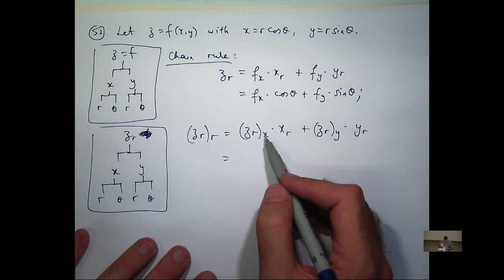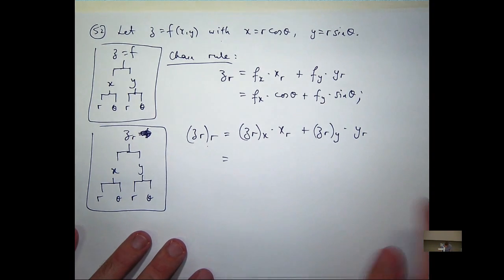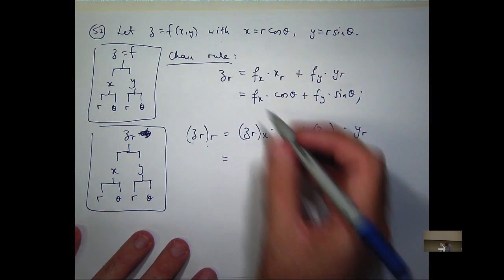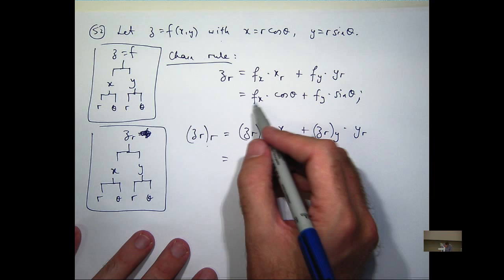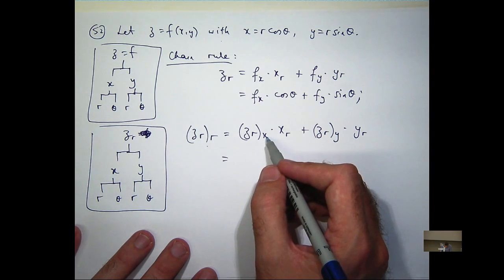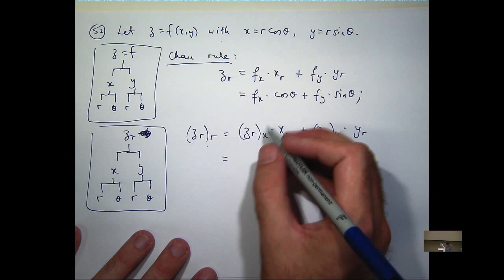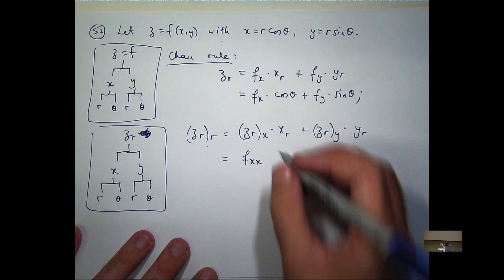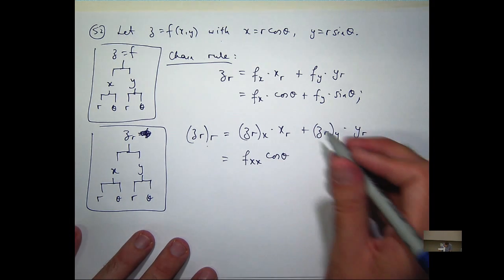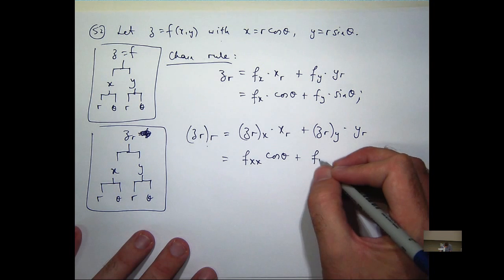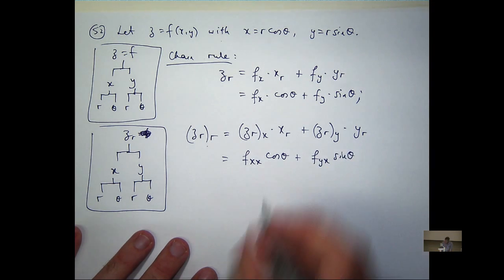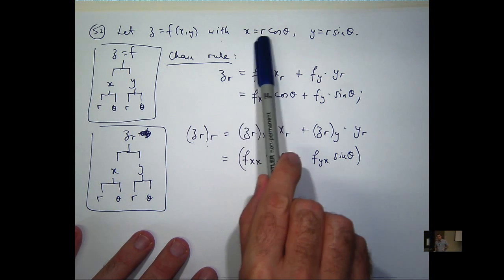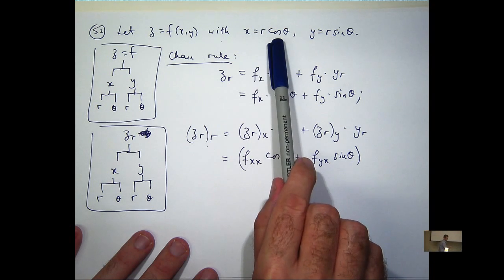All right. So let's go up here and differentiate with respect to x. What am I going to get up here? Well, I want to differentiate each of these terms with respect to x. Now, cosine theta, you can think of that as a constant. So f sub x differentiated with respect to x is just going to be f sub xx. And I can differentiate with respect to y here. x sub r, that's going to be cosine theta.